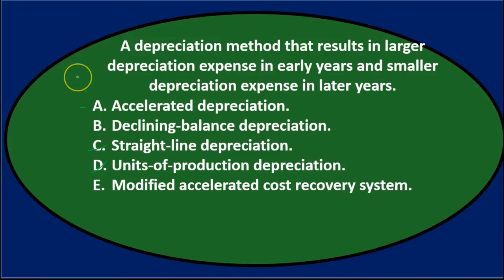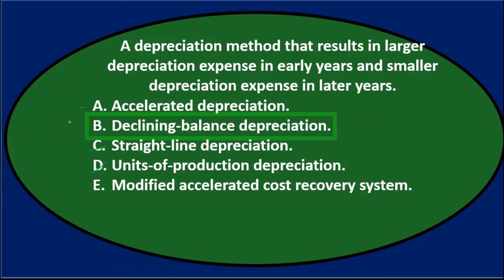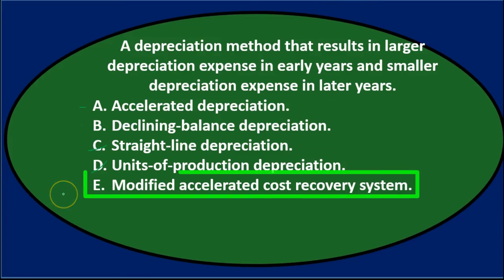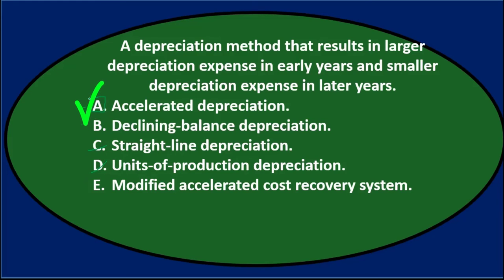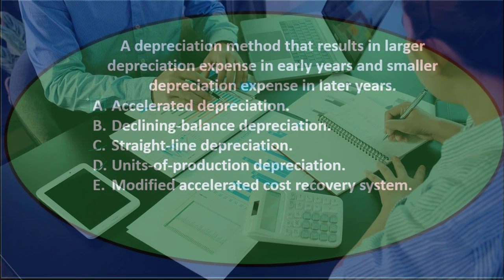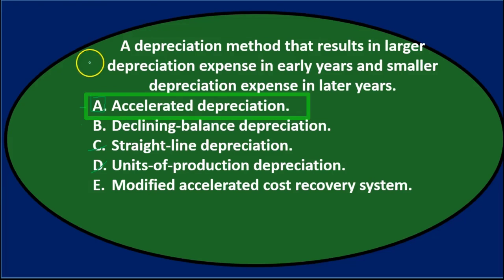So we've got A, B, and E as possibilities. But this question is really asking for the definition of what accelerated depreciation is, which is A. B, declining balance depreciation, and possibly E could fall into the category of an accelerated depreciation method. Therefore, A is the most correct answer, because that is what an accelerated method is — we could have different forms to achieve that. Answer: A. Accelerated depreciation.